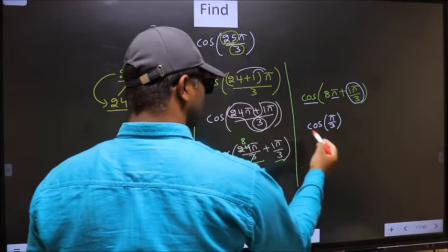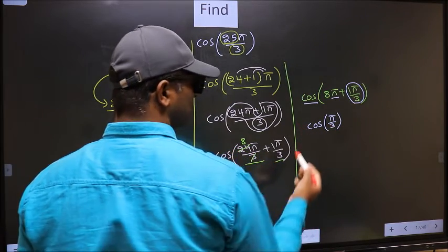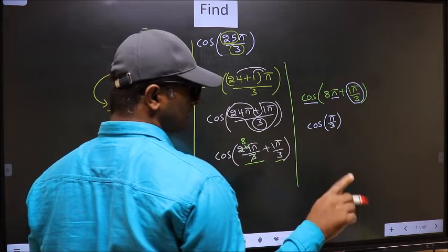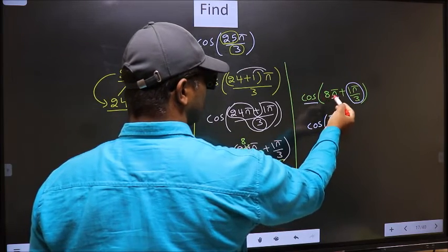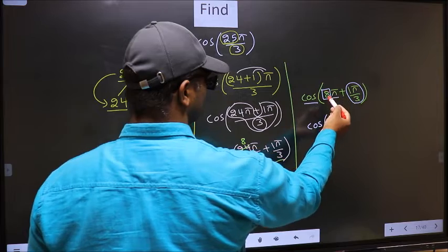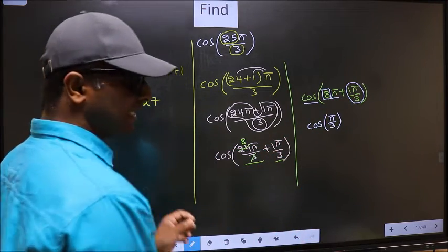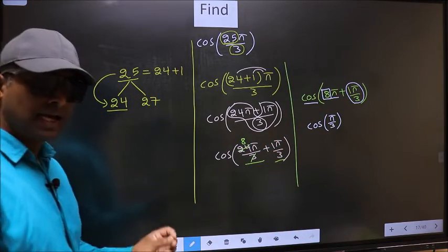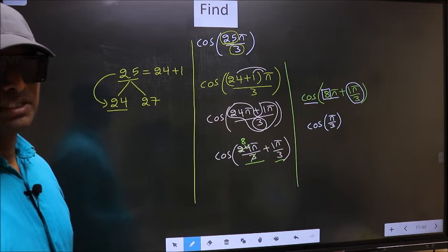Now the question is, will we get here plus or minus? To answer that, you should look at the number before π, which is 8. And 8 is even.